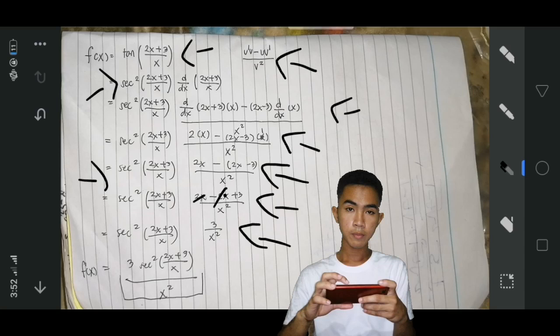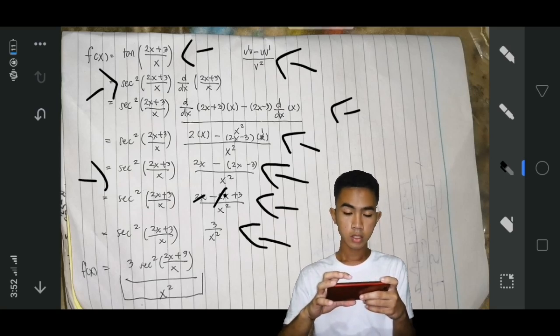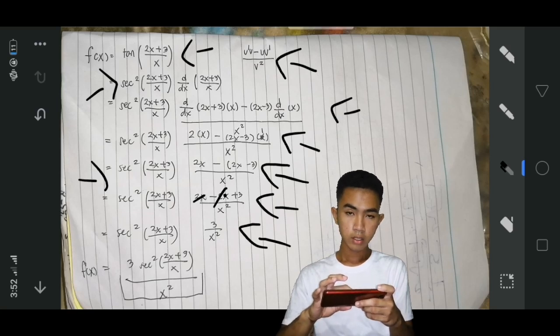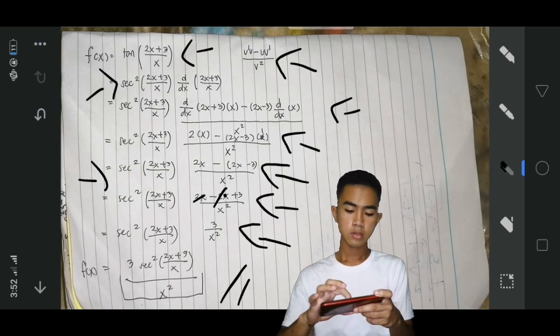After, multiply secant squared of 2x plus 3 over x into 3x squared. And this is the final answer: 3 secant squared of 2x plus 3 over x over x squared.